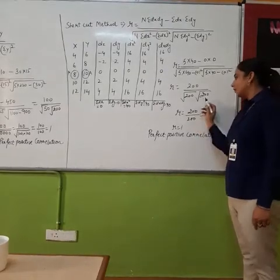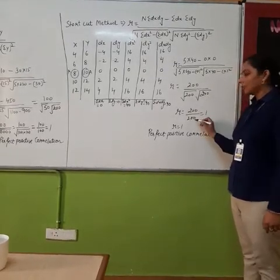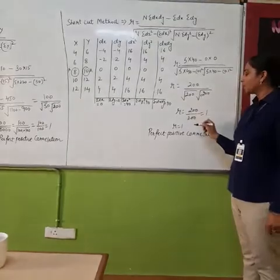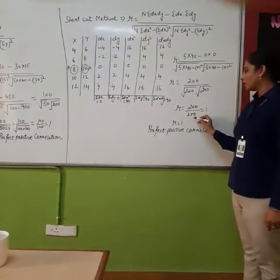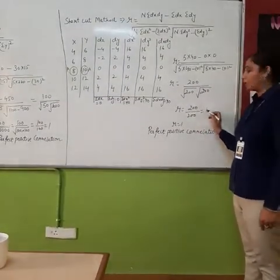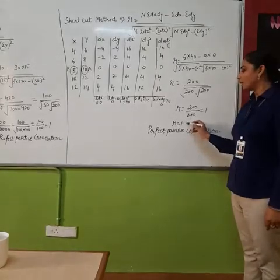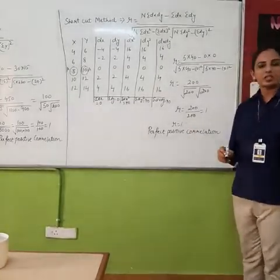This is also 200 under root and this is also 200 under root. So from square root if we take off these two, then this will be 200 only equal to this from this under root. So 200 divided by 200 is equal to 1. Then correlation will be equal to 1. 1 means perfect positive correlation.